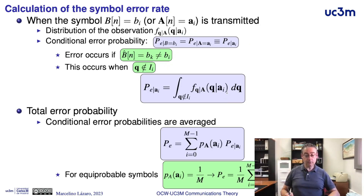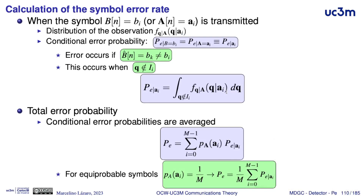The probability of error is obtained by averaging these conditional probabilities of error. And if we have equiprobable symbols, the expression is simpler because the probabilities of error for the different symbols are replaced by 1 divided by the number of symbols in the constellation.